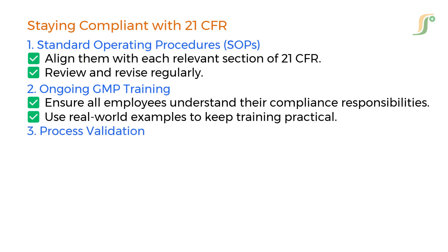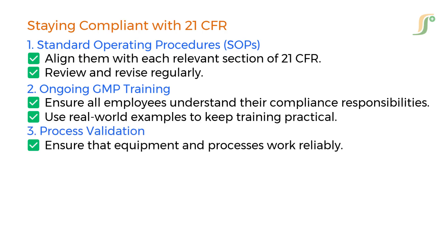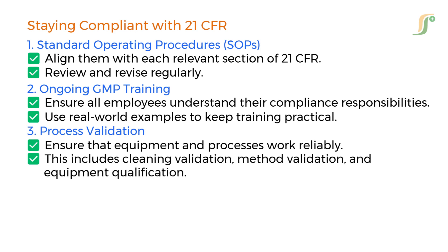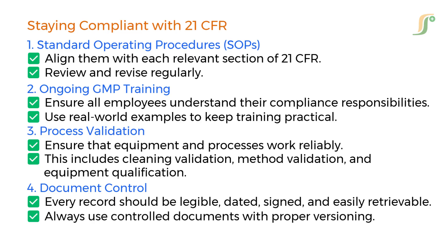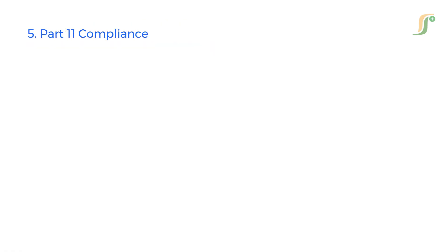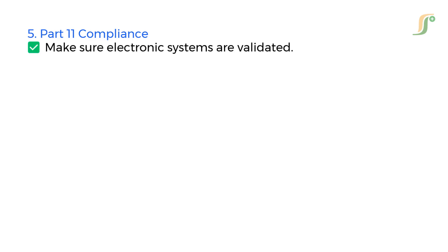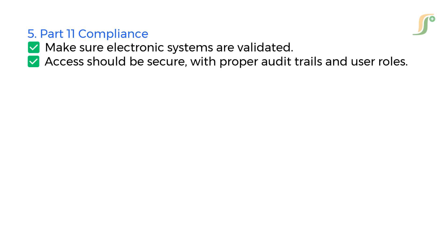Third, process validation: ensure that equipment and processes work reliably, including cleaning validation, method validation, and equipment qualification. Fourth, document control: every record should be legible, dated, signed, and easily retrievable — always use controlled documents with proper versioning. Fifth, Part 11 compliance: make sure electronic systems are validated, with secure access, proper audit trails, and defined user roles.